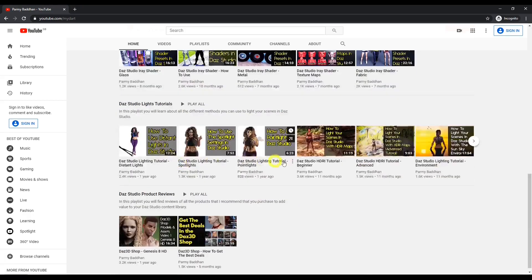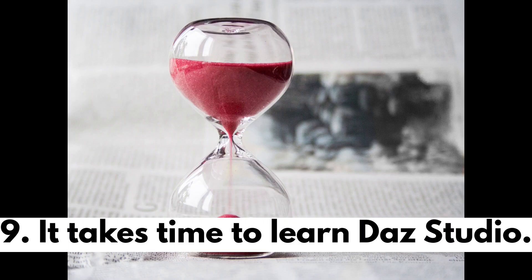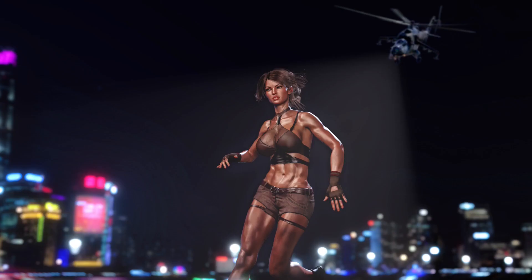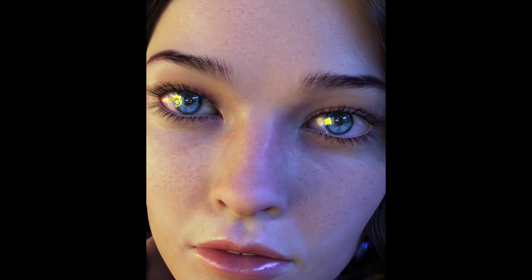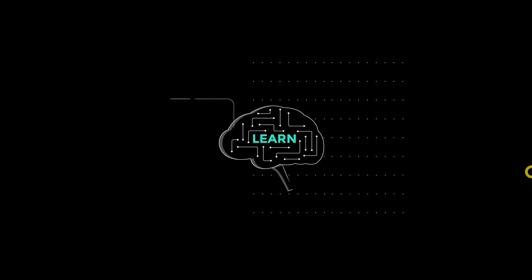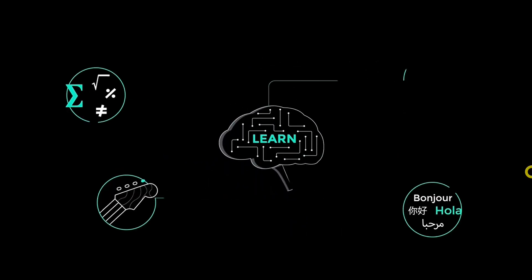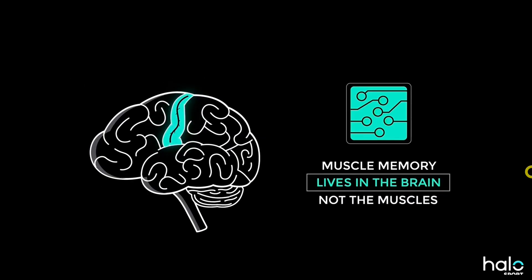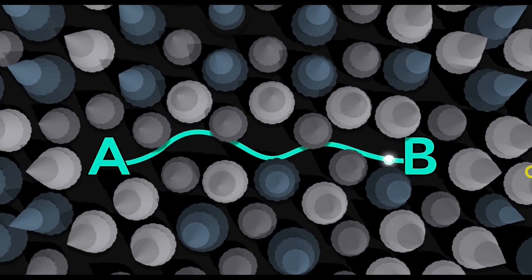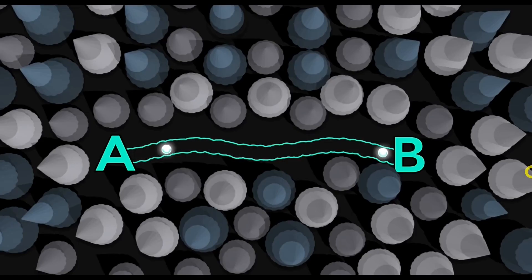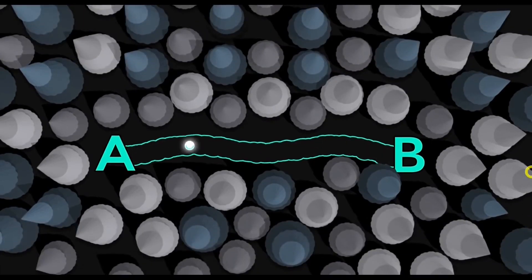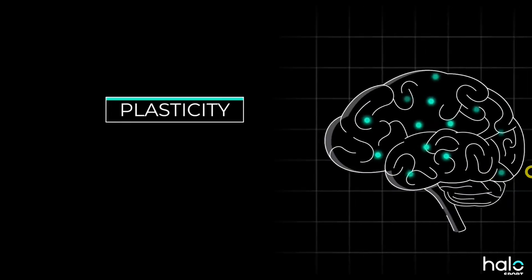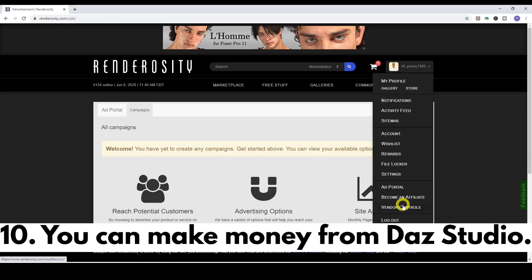Number nine: it takes time to learn DAZ Studio. If you expect to create really impressive renders quickly, it's not that straightforward. Just like with anything in life, the more time you spend doing it the better you get. Your brain is a learning machine — if you understand that, you can learn how to do anything. It just takes time, effort, and energy, and once you apply those three things you can learn any skill.